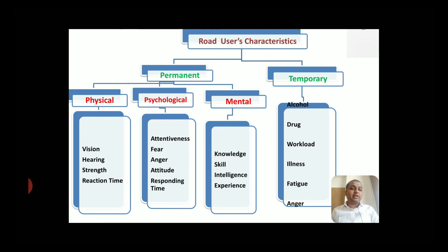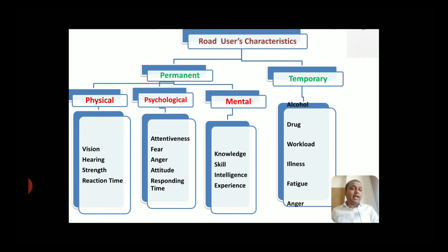Now let's talk about temporary road user characteristics. These are characteristics that have a temporary effect. First is alcohol and drug — because of alcohol and drug consumption, the brain is affected, and all the mental, physical, and psychological characteristics of a road user are impacted for a temporary period. Other temporary characteristics include illness, fatigue, and anger.